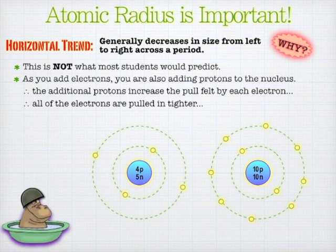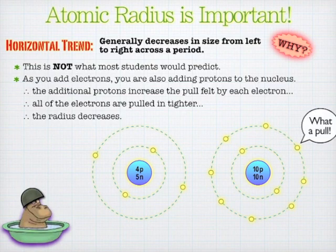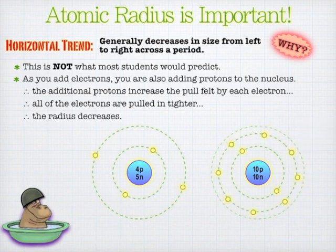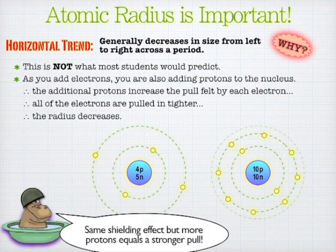What actually happens is as we move across — here are some elements — we go lithium all the way to neon. As we have more protons in the nucleus, watch the electrons get snugged in. Now, I'm using the planetary model; obviously they don't look like that, but the electrons will get snugged in tighter. It's the same shielding effect as in the vertical trend, because in this case there are two electrons getting in the way, but there are more protons pulling. So there's only so much that those electrons can shield, and therefore all the other electrons will get snugged in.